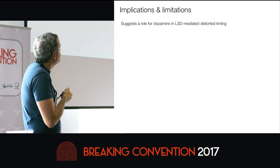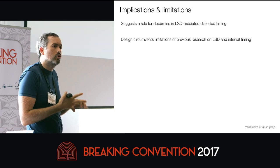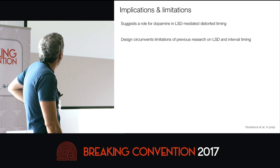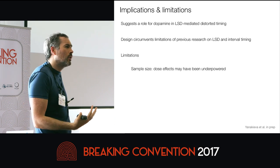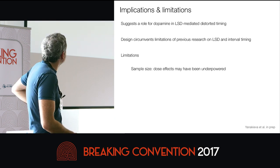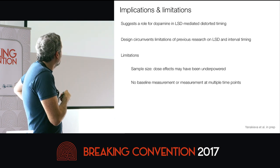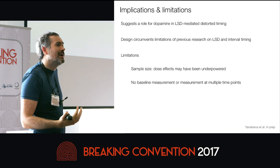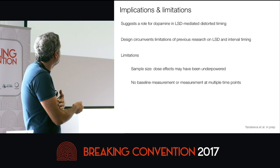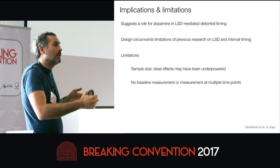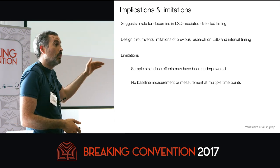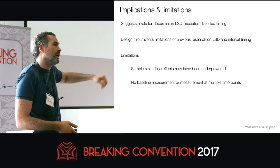We think the design circumvents limitations of previous research on LSD and interval timing, most notably lack of placebo controls and random assignment, and helps address the potential confound of altered states of consciousness. Important limitations include the sample size — though 48 participants total is not bad, dose effects may have been underpowered. There is also no baseline measurement, though random assignment mitigates this concern somewhat. We would also have liked measurement at multiple time points, which would allow more precise identification of the dissociation between serotonergic and dopaminergic phases — we would expect temporal underestimation in early serotonergic phases, and temporal dilation in the dopaminergic phase as observed.